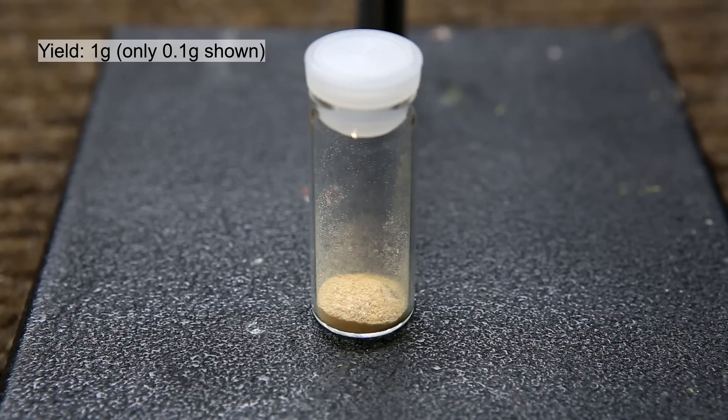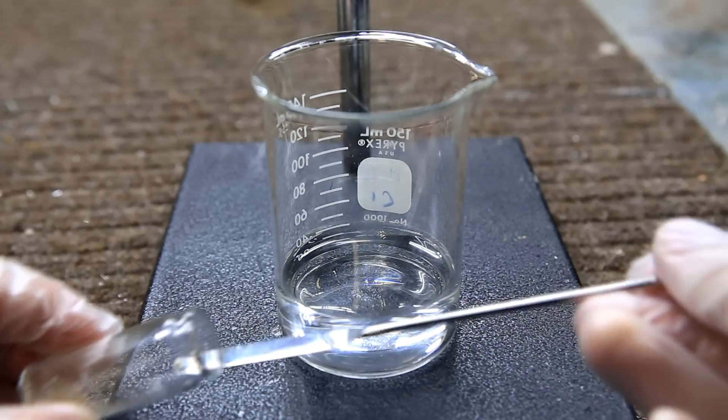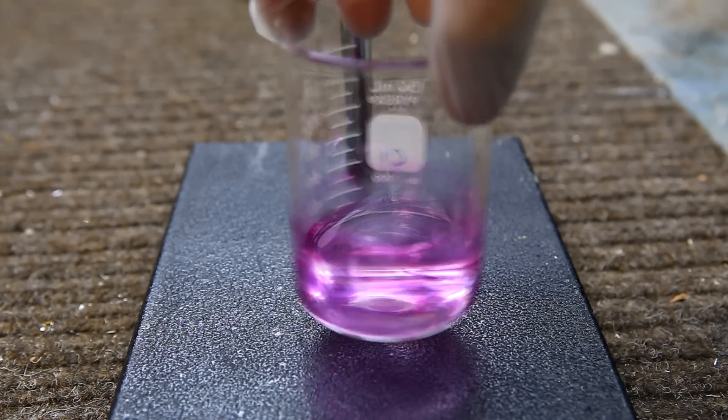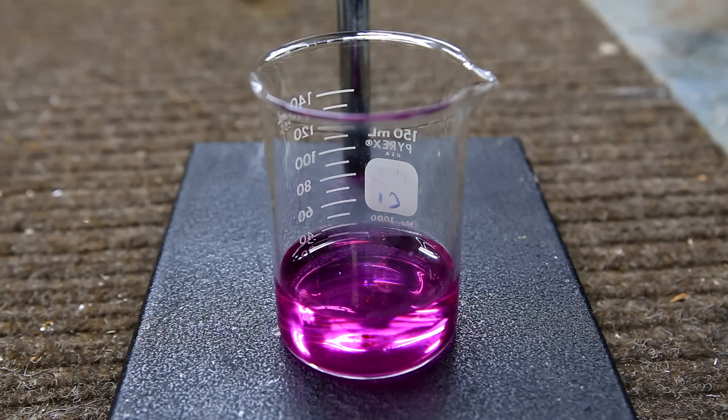Now, to test it, a couple small grains of phenolphthalein was added to a basic solution. And immediately upon the addition, the solution quickly turns purple.